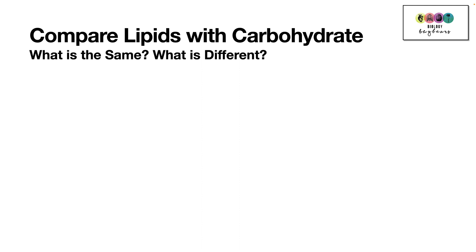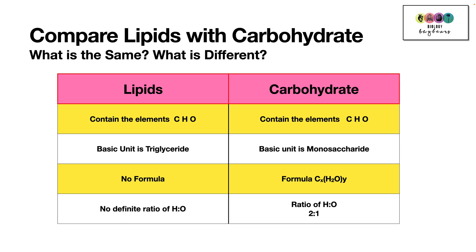Let's compare lipids with carbohydrates. Both contain the elements carbon, hydrogen, and oxygen. However, the basic unit of a lipid is a triglyceride, whereas the most basic unit of a carbohydrate is a monosaccharide. Lipids do not have a formula, but carbohydrates do. There is no definite ratio of hydrogen to oxygen in lipids, but in carbohydrates the ratio is always 2:1 — twice as much hydrogen as oxygen.